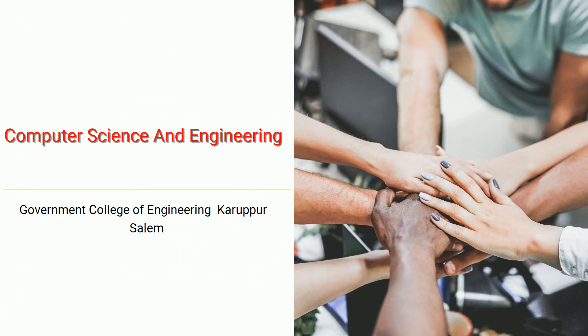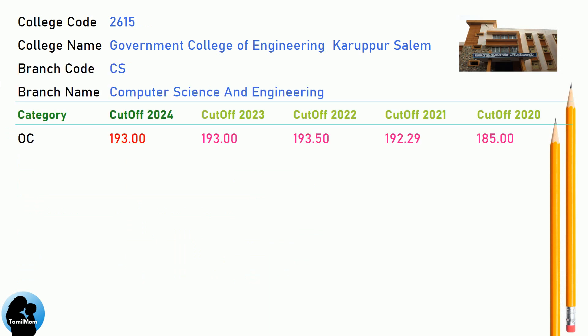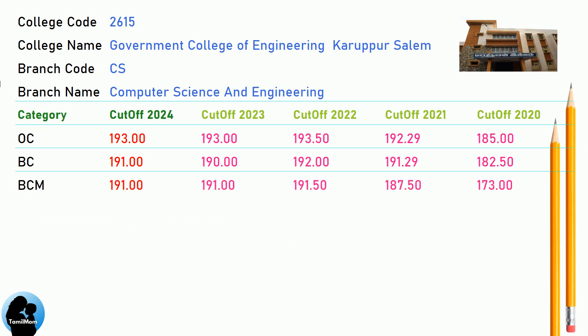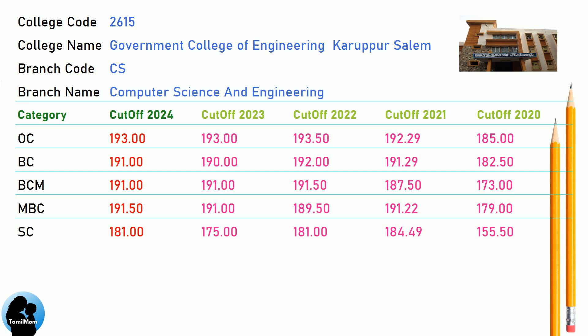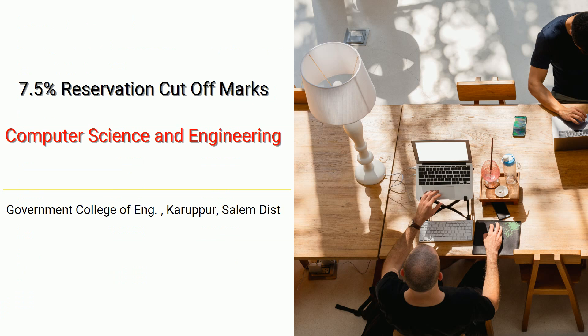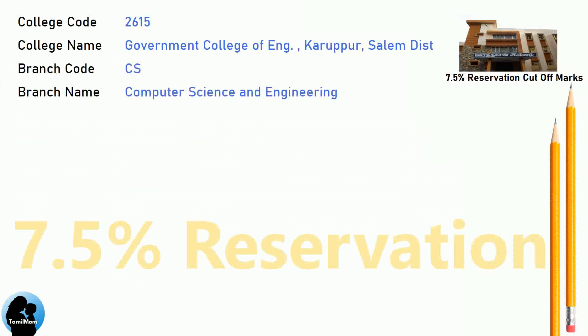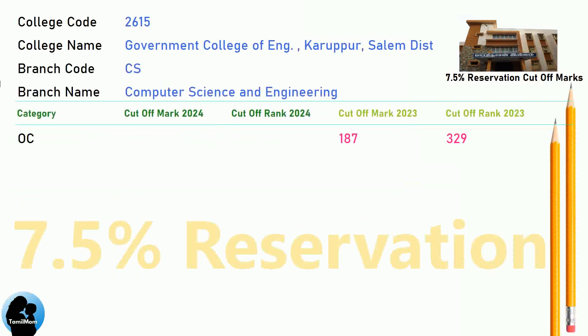DNA Cut-off for Government College of Engineering, Karupur, Salem in Computer Science and Engineering. DNA 7.5 Reservation Cut-off for Government College of Engineering, Karupur, Salem District in Computer Science and Engineering.